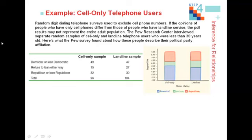Let's try it again, this time using our calculators in a more streamlined way. Random digit dialing surveys are used to exclude cell phone numbers. If the opinions of people who only have cell phones differ from those with landline service, poll results may not represent the entire adult population. The Pew Research Center interviewed two separate samples — one of cell-phone-only people and one of landline-only people who are under 30 years old.